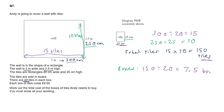Now, you can't buy 7.5 boxes. You're either going to need to buy 7 boxes or 8 boxes. 7 boxes won't quite be enough. So therefore, you're going to need to buy 8 boxes of tiles.